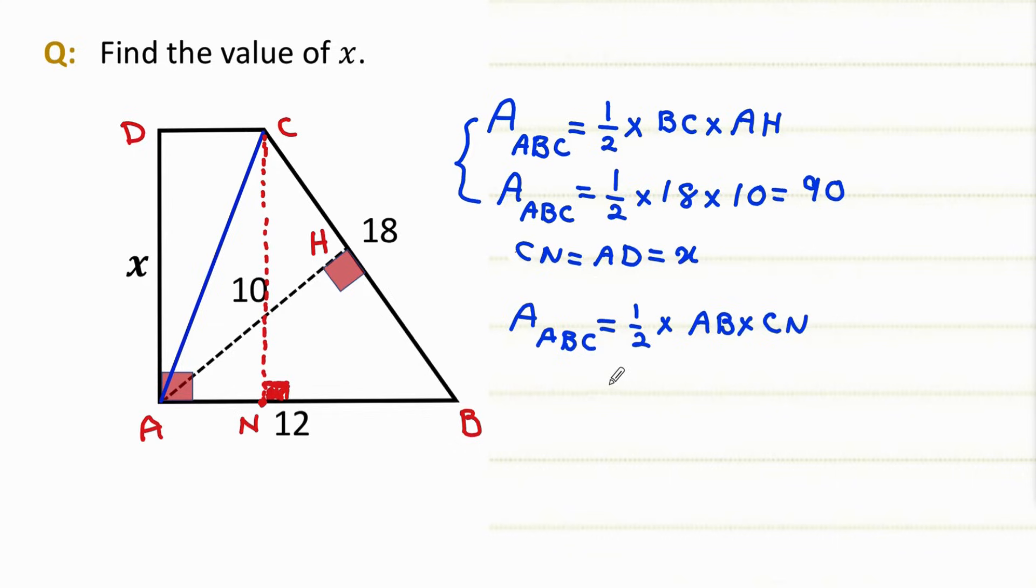So that's why we can write 1 over 2 times AB is 12 units times CN, which is x. So this becomes 6x.